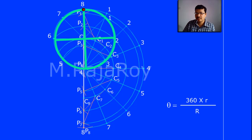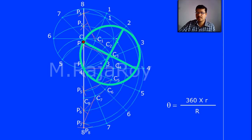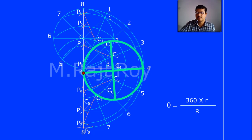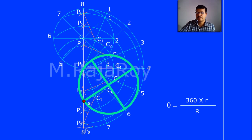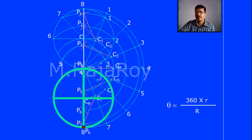Now observe this animation. You can clearly see the path traced by this particular point on the circumference of the rolling circle, or generating circle. This is a straight line when it is rolling inside this big circular arc. The diameter of the directing circle is 2 times the diameter of the rolling circle — that is, the diameter of the rolling circle is half of the diameter of the directing circle.